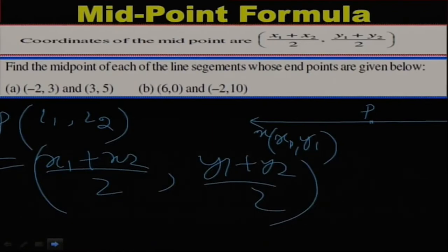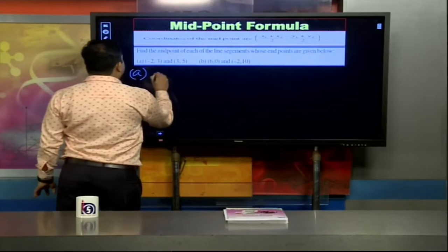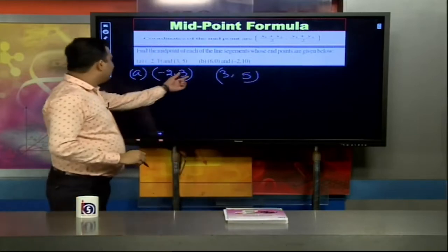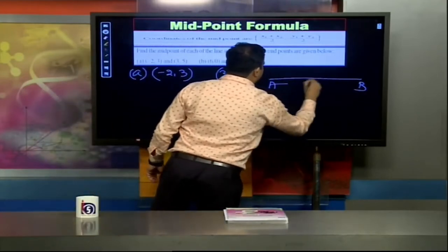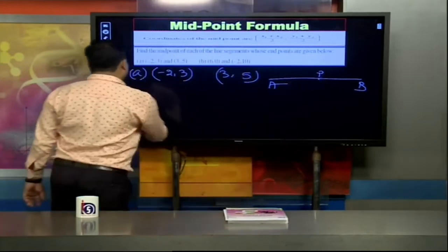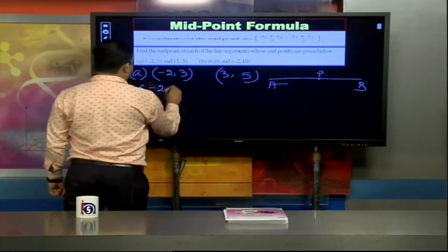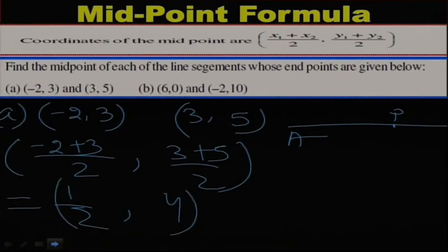Let us take an example. Suppose point A has coordinate (-2, 3) and point B has coordinate (3, 5). What will be the midpoint of AB? The midpoint is: (-2 + 3)/2, comma, (3 + 5)/2, which gives 1/2, comma, 8/2 = 4. So the coordinate of the midpoint P will be (1/2, 4).